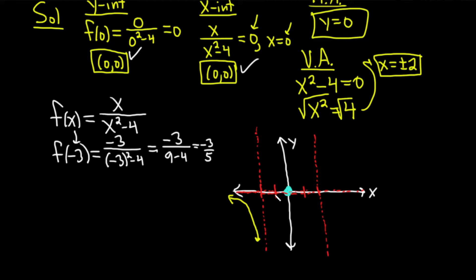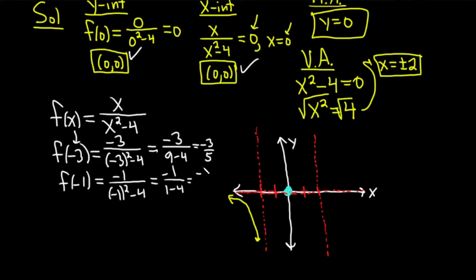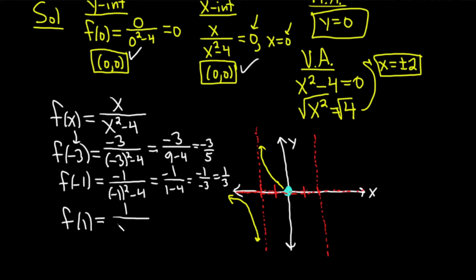Let's pick x equals negative 1. f of negative 1 equals negative 1 over negative 1 squared minus 4, which is negative 1 over 1 minus 4, giving negative 1 over negative 3, which equals 1 over 3. That's positive, so the graph is up here, meaning it approaches the asymptotes upward. Then plugging in x equals 1: f of 1 equals 1 over 1 squared minus 4, which is 1 over negative 3 — negative. So now we know it crosses.